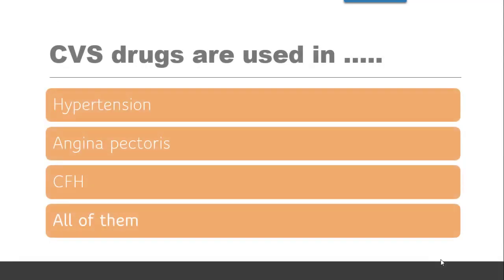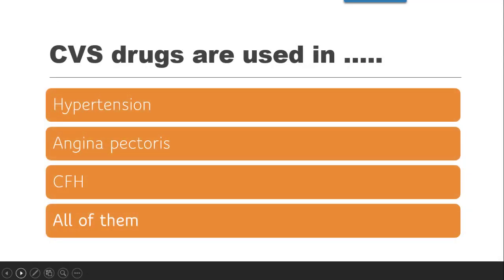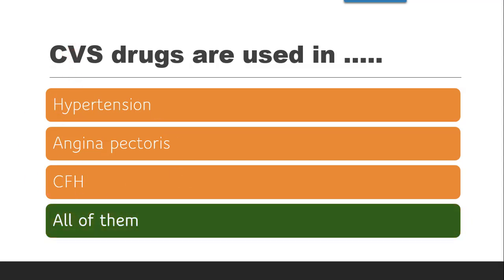The first question from Cardiovascular Drugs is: Cardiovascular drugs are used in which of these conditions? Whether they are used in treatment of hypertension — yes, hypertension is an increase in blood pressure. Then angina pectoris — yes, it is chest pain radiating from the left arm. Then congestive heart failure. So all these conditions can be treated by cardiovascular drugs. The correct answer is all of them.